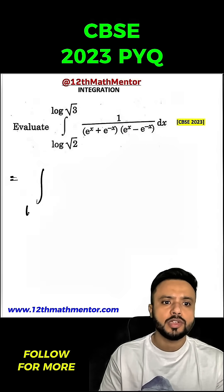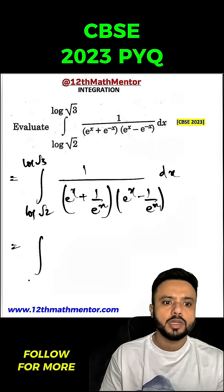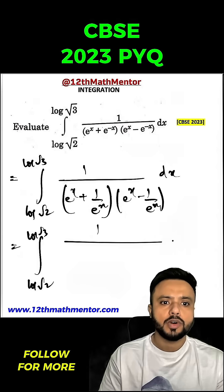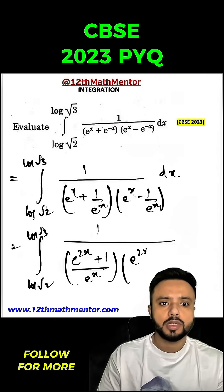First I'm going to simplify the given function. It will be integral of log root 2 to log root 3, 1 by e raised to the power 2x plus 1 by e raised to the power x, divided by 2 e raised to the power 2x minus 1 upon e raised to the power x dx.